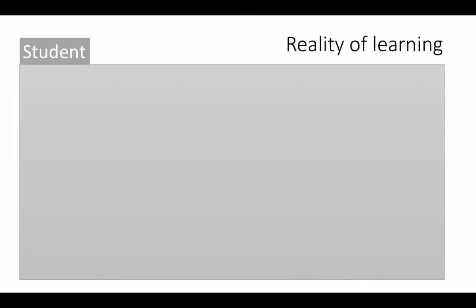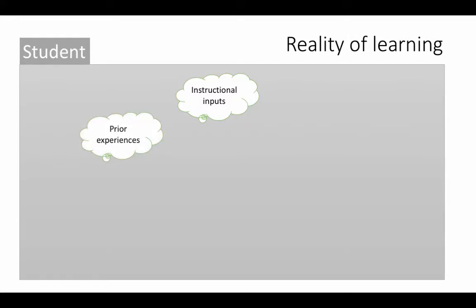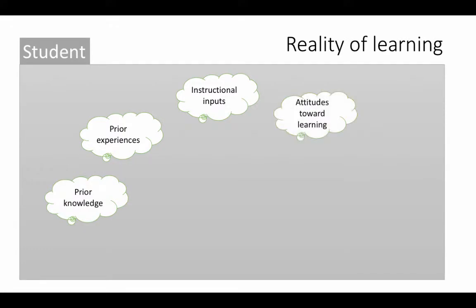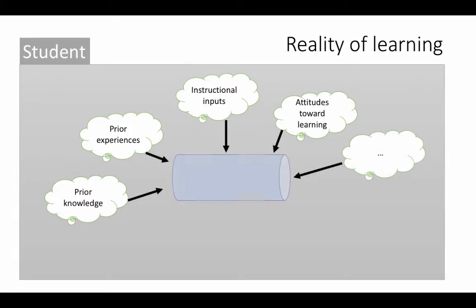That's why the box for the instructor is very big in that model. The reality of learning is pretty different. In reality, a student gets a lot of inputs: instructional inputs, prior experiences, prior knowledge, attitudes towards learning, and so many other factors. All of them play a role in how students assimilate what they're learning. The icon I've used here is that of a drum — all of these things come in together, get churned up, and result in the student's learning.